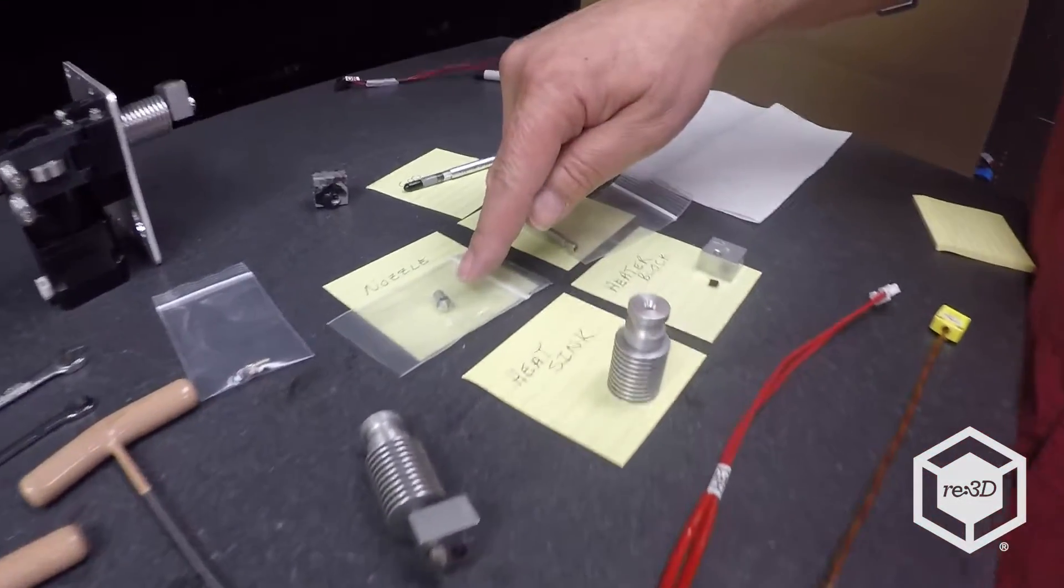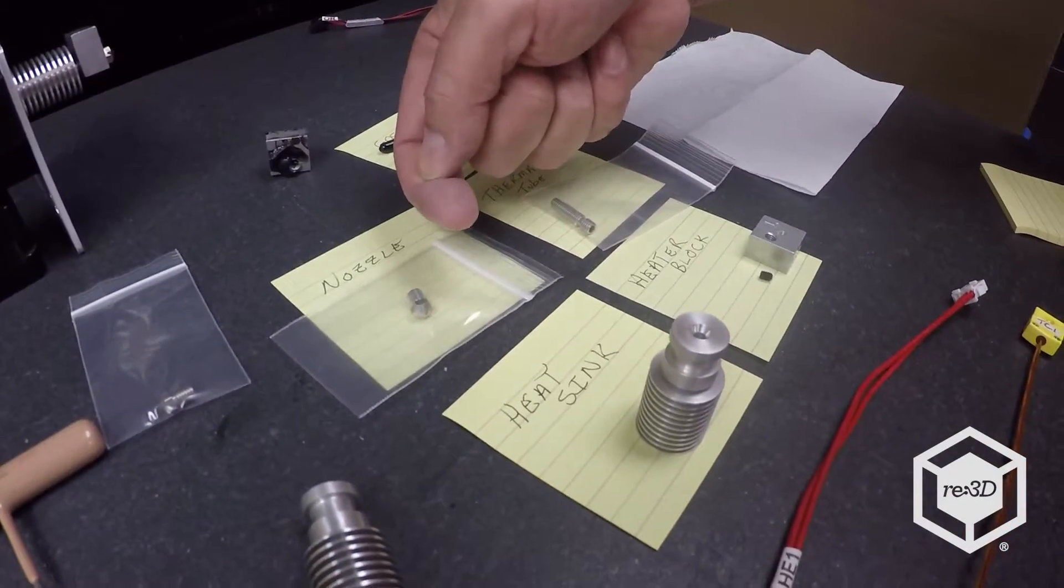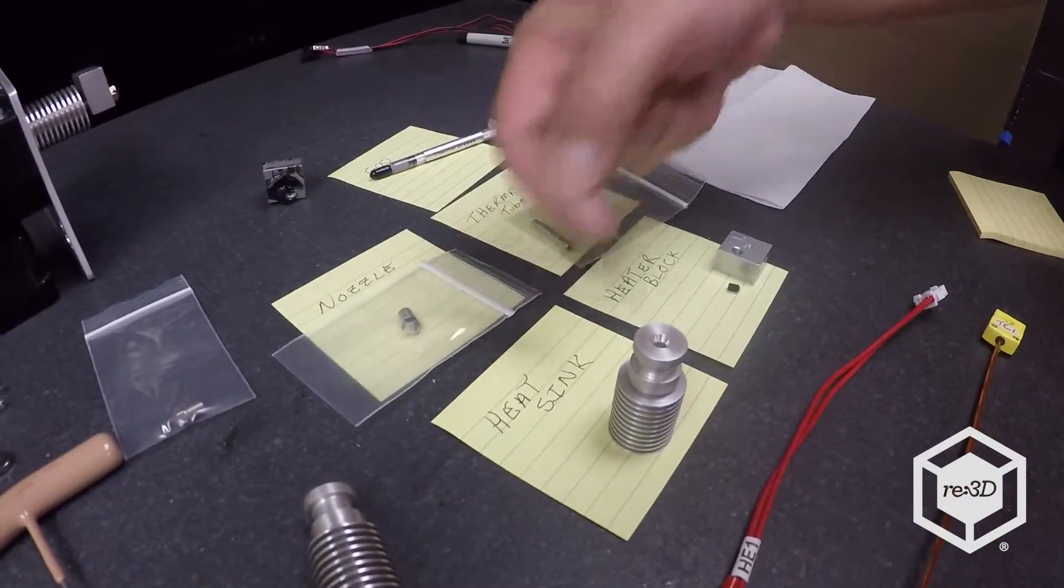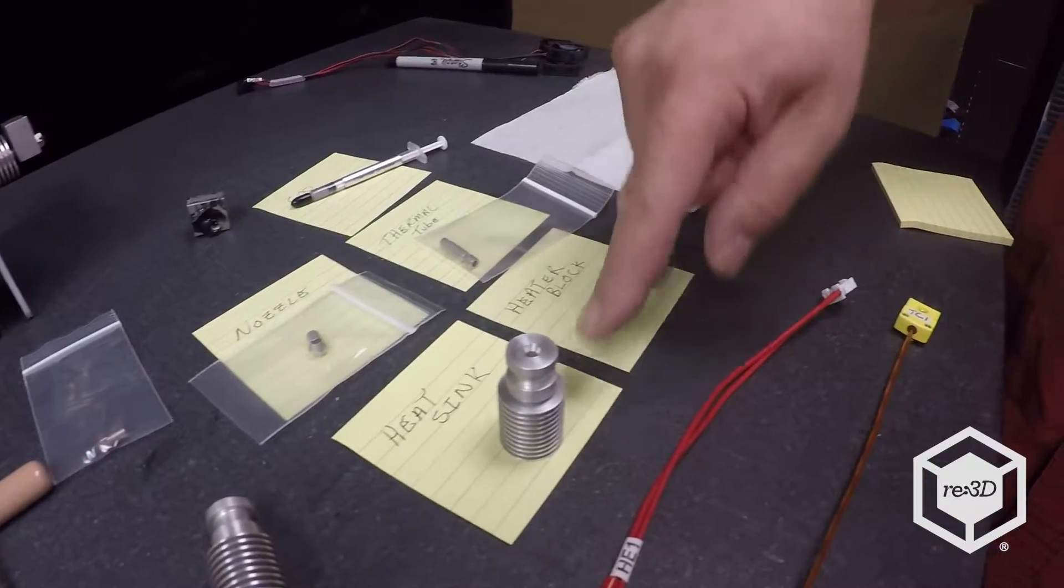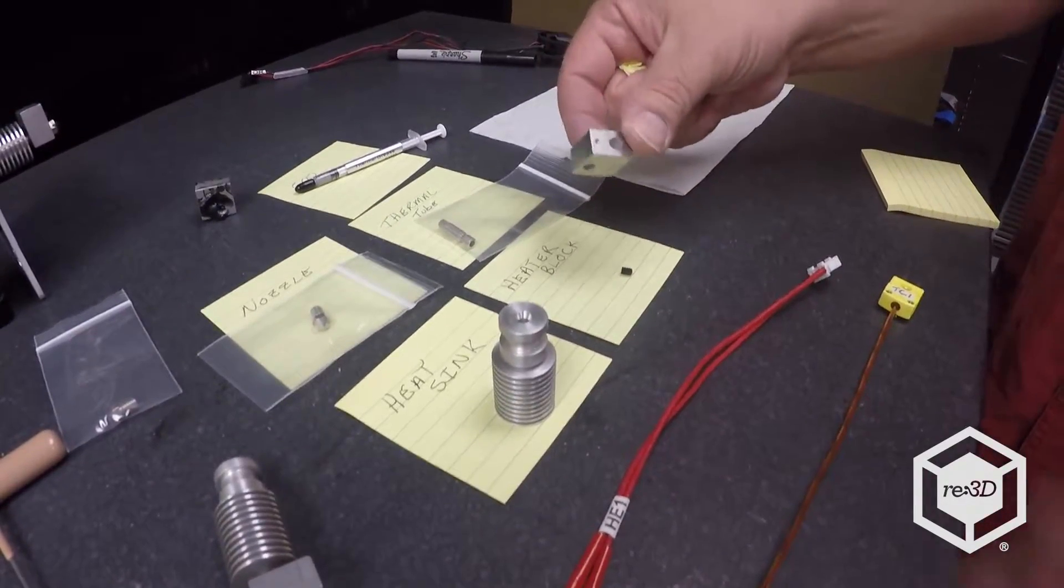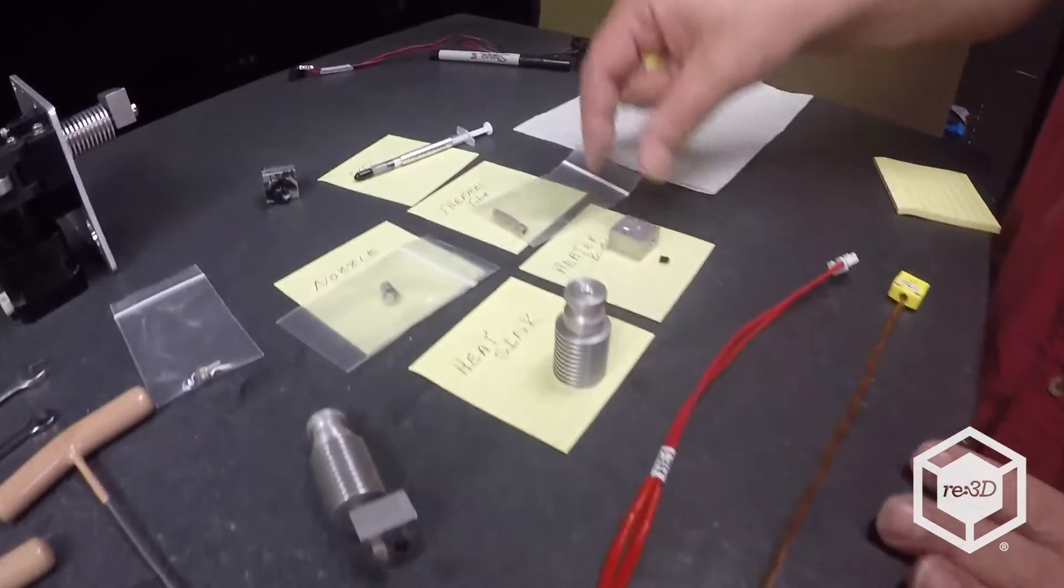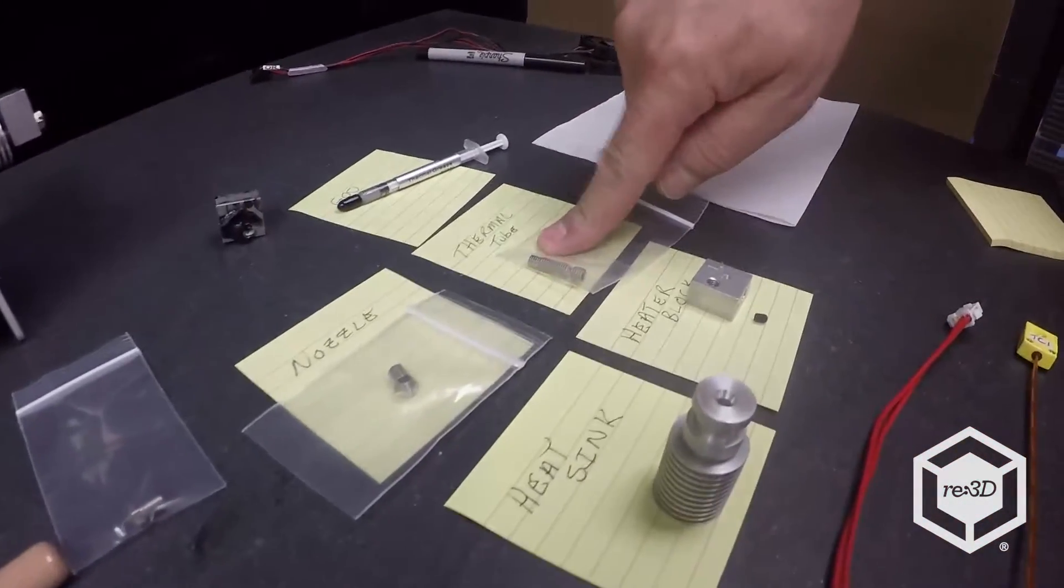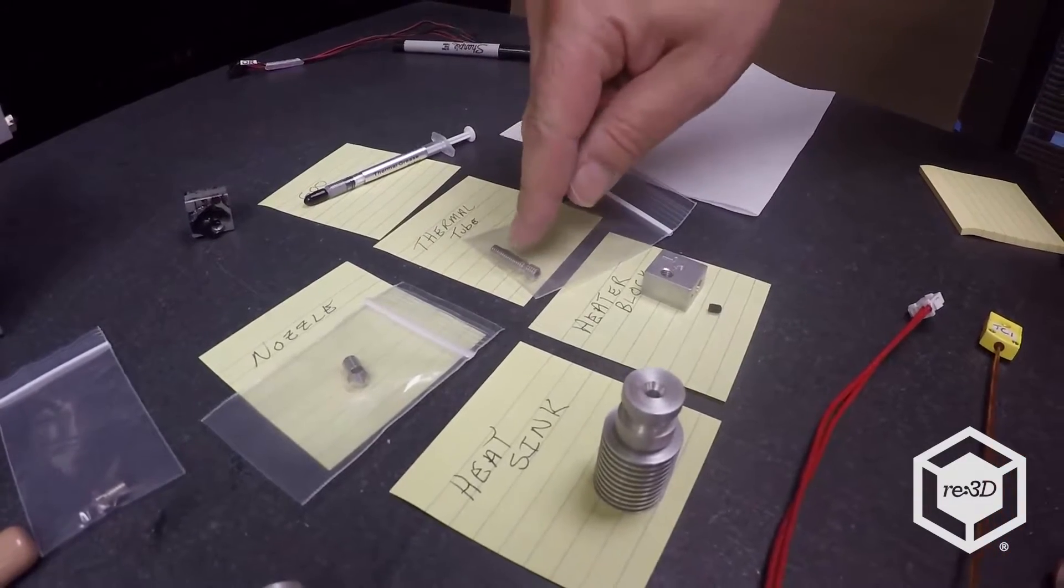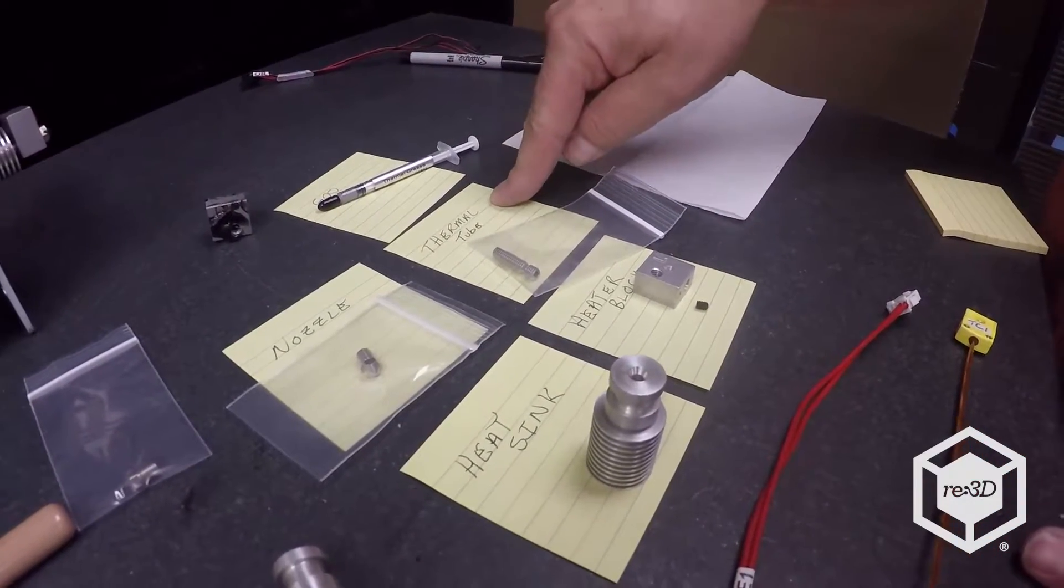Starting from the bottom we have the nozzle. That's what converts the large filament via heat into your small stream. It goes in through the heater block which is where your heater cartridge and thermocouple plug in. Then it comes through the thermal tube which connects the two together. This is also called a heat break.